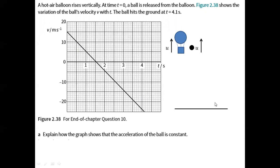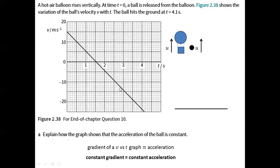For the first question: explain how the graph shows that the acceleration of the ball is constant. When dealing with velocity versus time graphs, the gradient of the graph represents acceleration. The graph is linear and the gradient is constant, which means the acceleration is also constant.